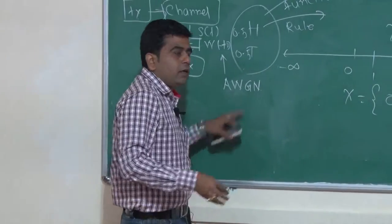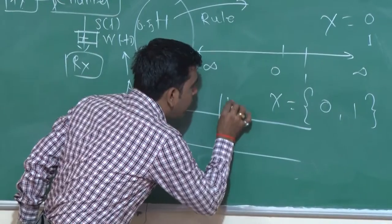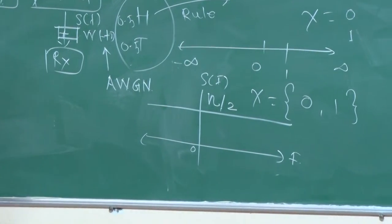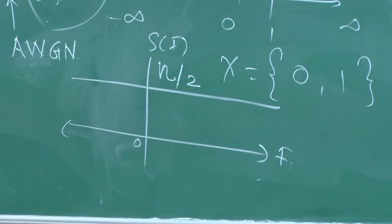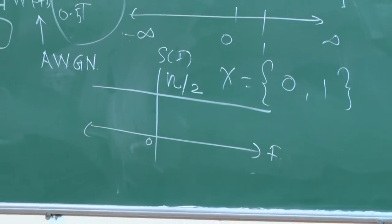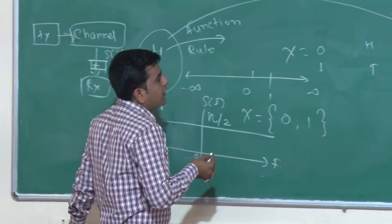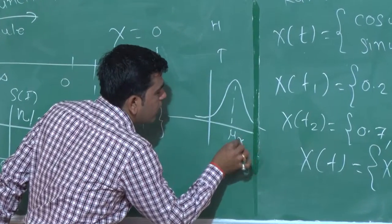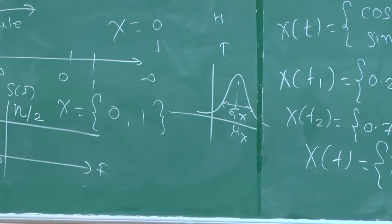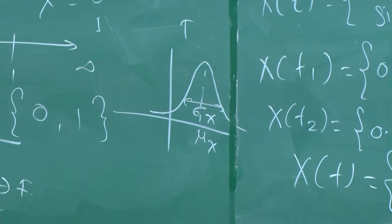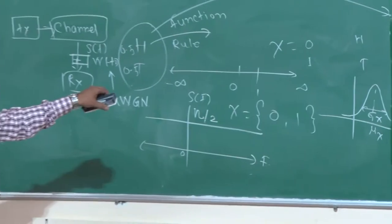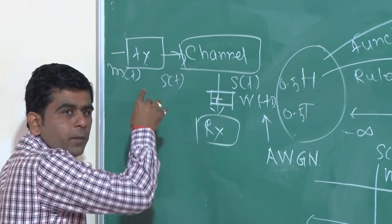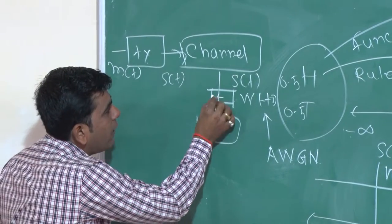Second, 'white' — its power spectral density will get equal values, that is η/2, for all the frequencies. For all frequencies we will get the same magnitude of power for this noise; that is the meaning of the word 'white'. Then 'Gaussian' — its probability density function (PDF) generally follows the Gaussian structure. And the last word is 'noise'. This noise is unpredictable; over this noise we have to do this analysis.